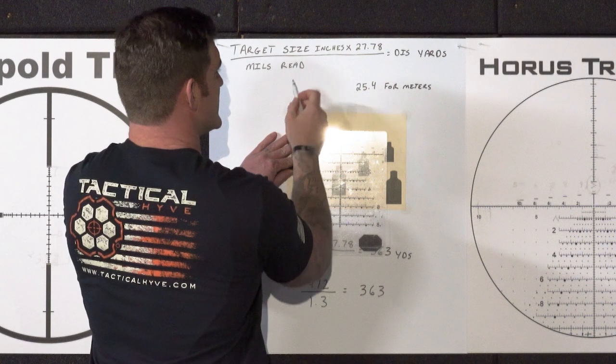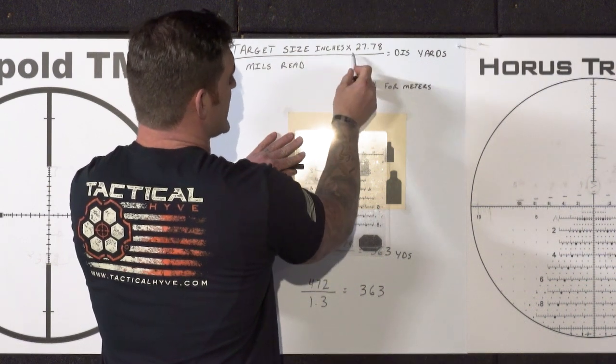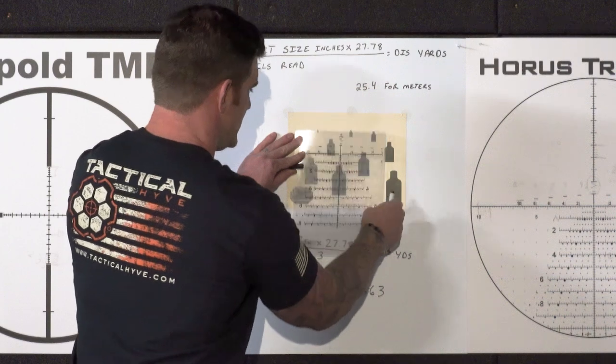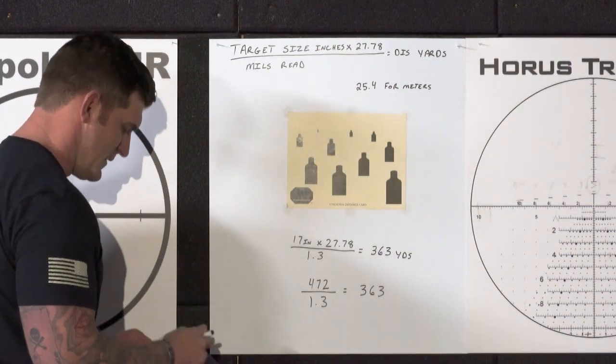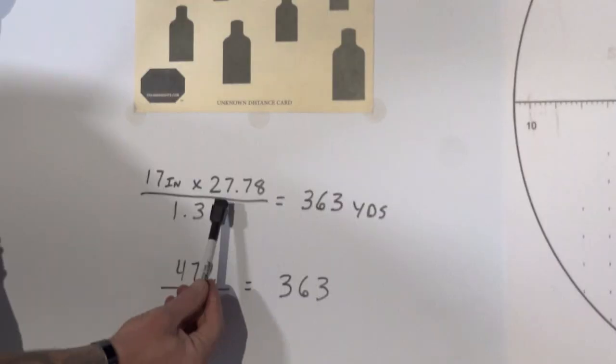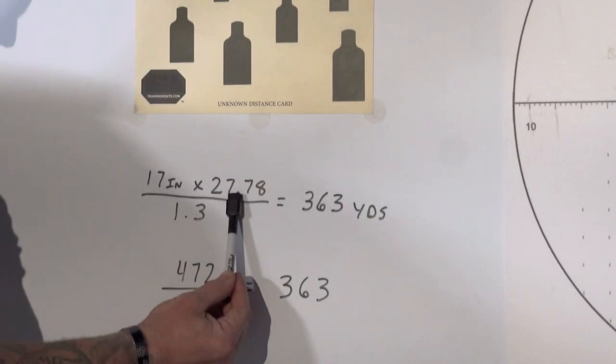Target size in inches is going to be 17. We're going to times it by 27.78 and then divide it by now 1.3. So if we look at the math down here after we milled our target, 17 inch target times it by 27.78 that gives us 472.